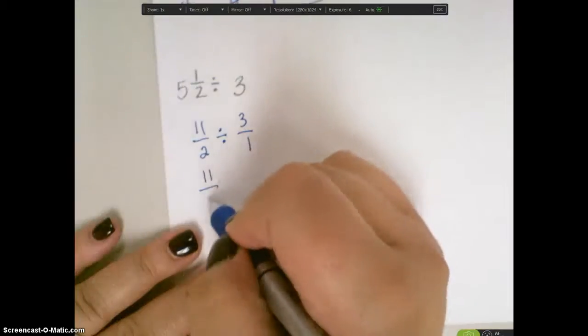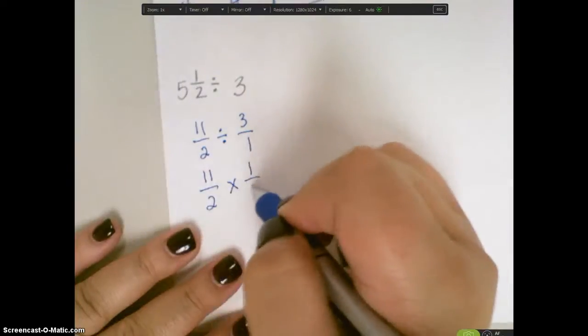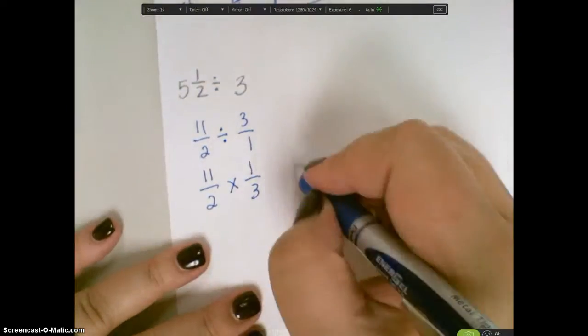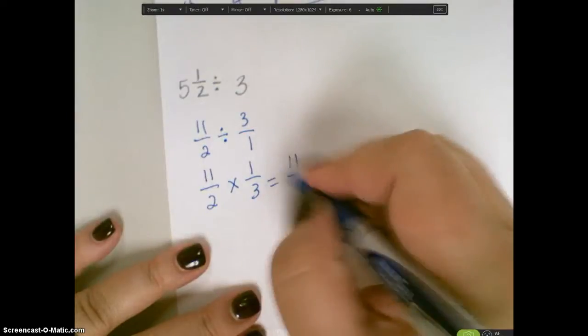Now I can say 11 over 2 times 1 over 3. Multiply across, I'm going to get 11/6.